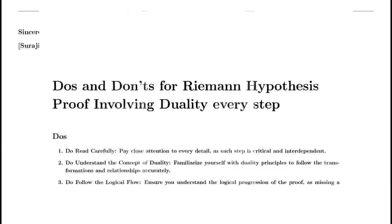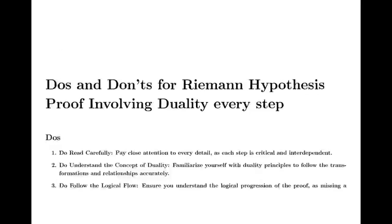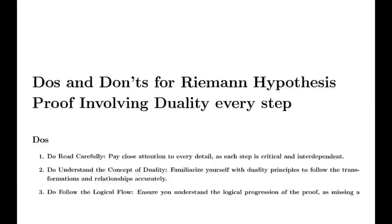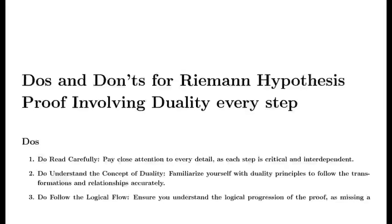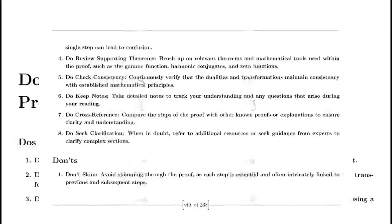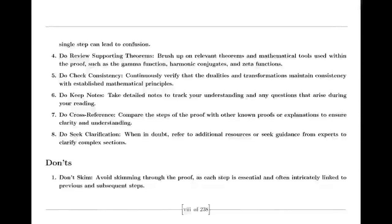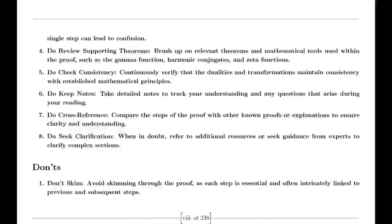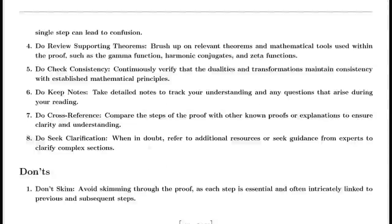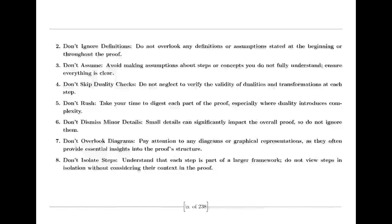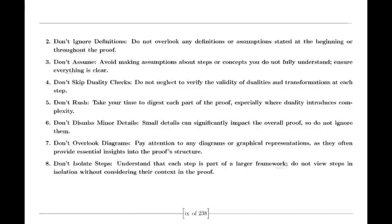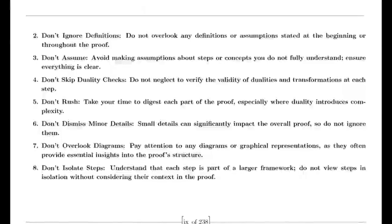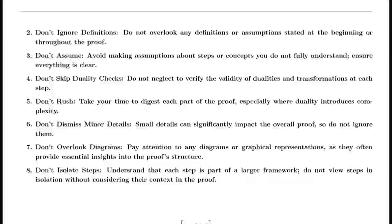Basel Problem Solution. Euler also tackled the Basel problem, concerned with finding the exact sum of the reciprocals of the squares of the integers. By examining the sine function in its product representation, Euler derived a formula for this sum, showing that it is equal to π²/6. This result was a significant achievement in mathematics and highlighted Euler's ability to uncover connections between different mathematical concepts.